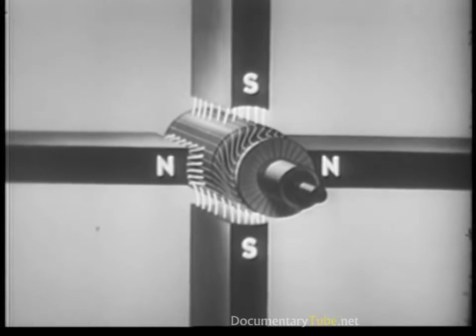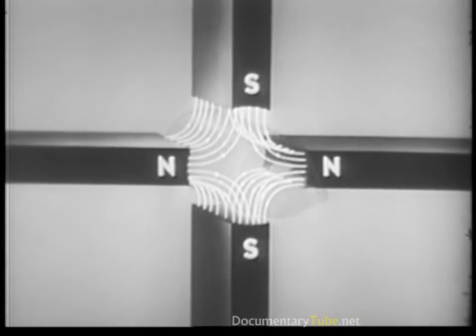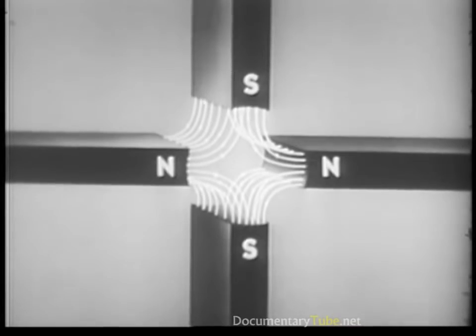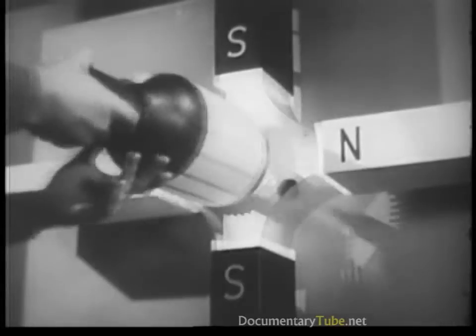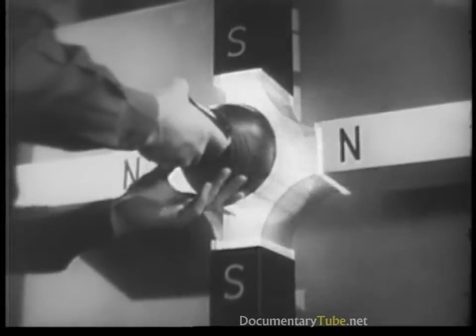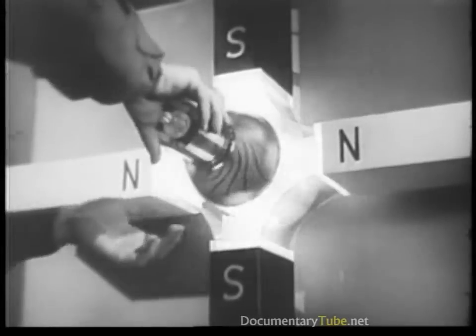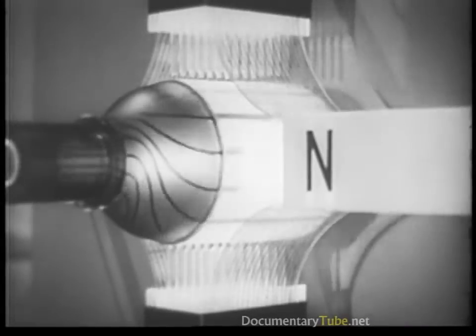Here we see the armature in a magnetic field composed of four bar magnets, which increases the lines of force of the magnetic field for the considerable power required. However, these larger magnets, which increase the rotating power of the armature, are too unwieldy.